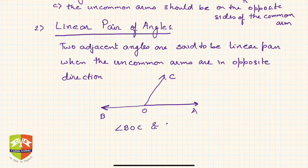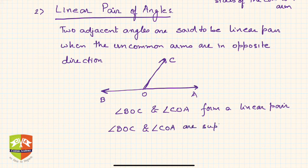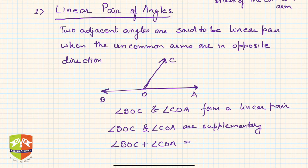So angle BOC and angle COA form a linear pair. This means they are supplementary — angle BOC plus angle COA is equal to 180 degrees.